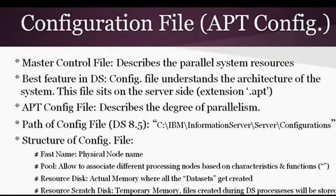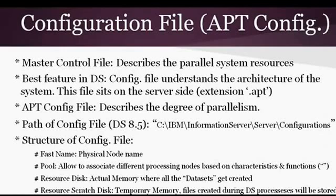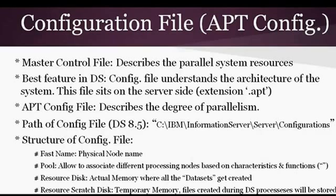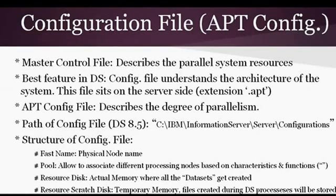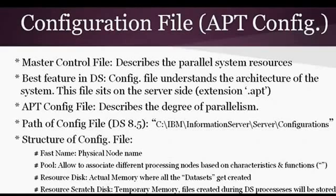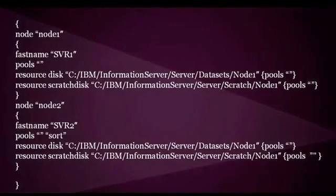The third and fourth components are resource disk and resource scratch disk. Resource disk is actual memory where all data sets are created — data set is one of the stages in parallel jobs. Resource scratch disk is temporary memory where all background files created during DataStage processing are stored. Every process has its own way of functioning and creates files, and those files are stored in the resource scratch disk. Here's how your configuration file looks.